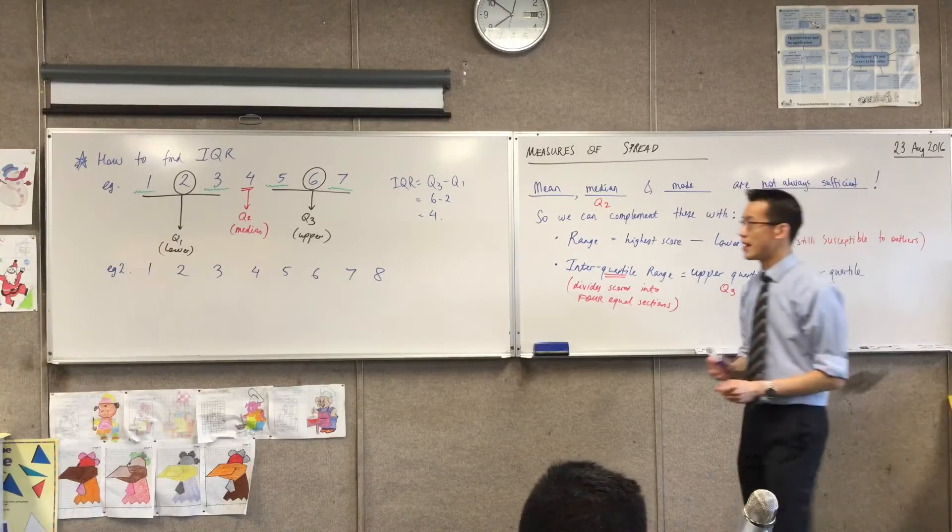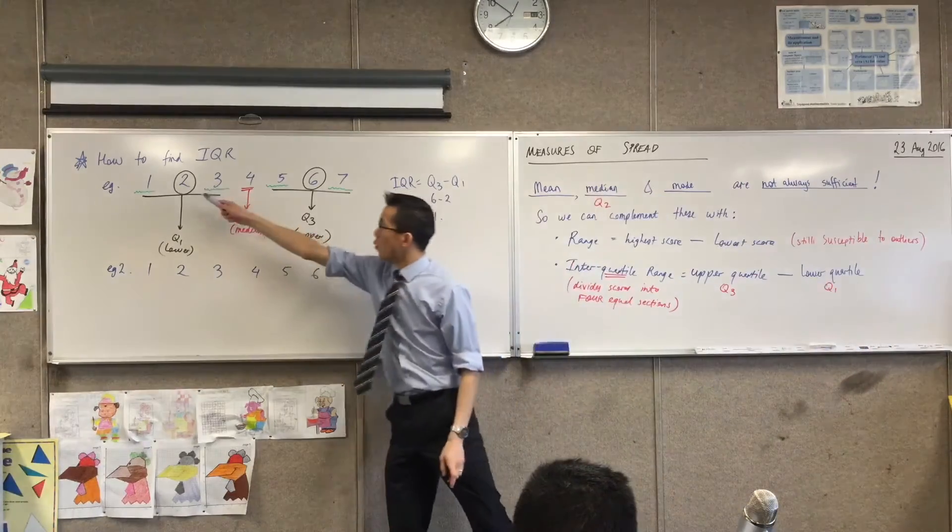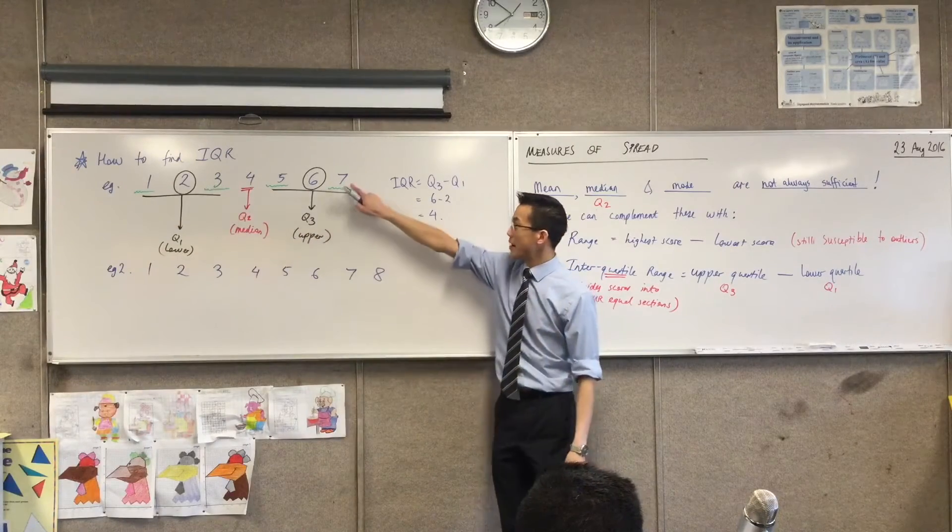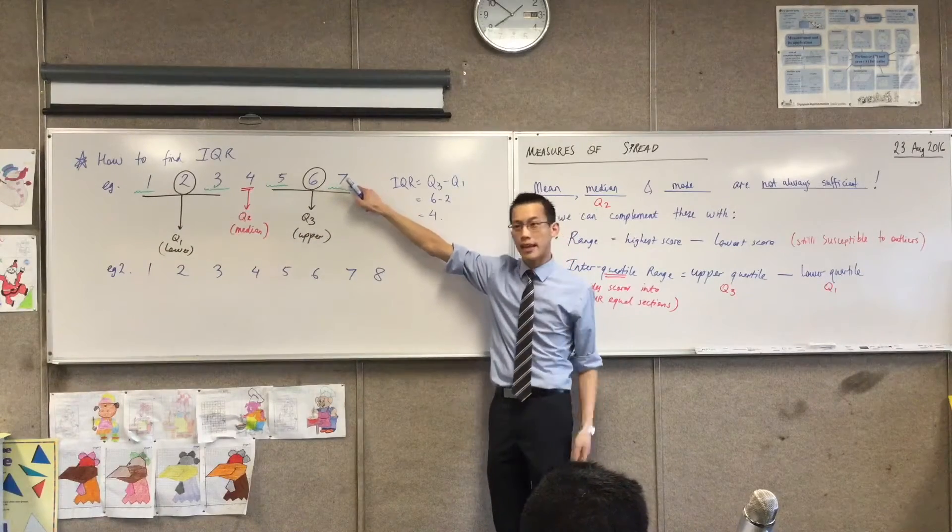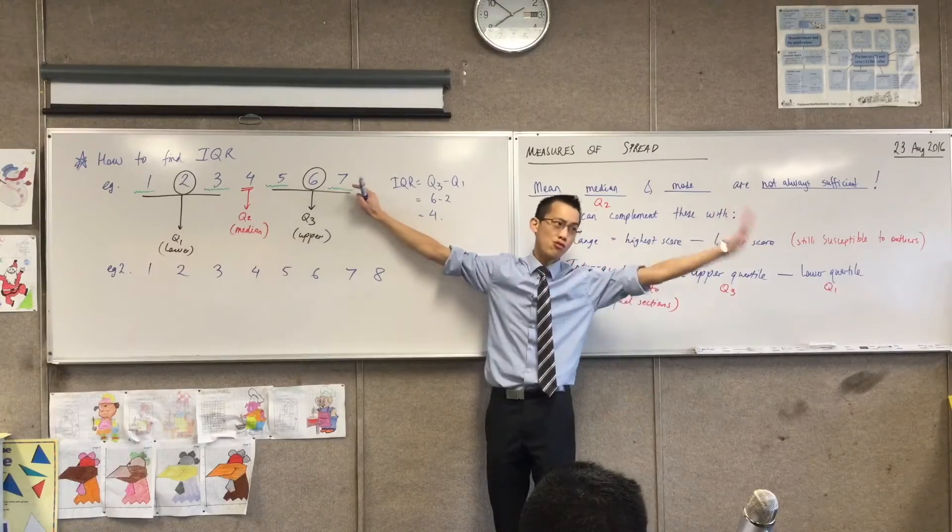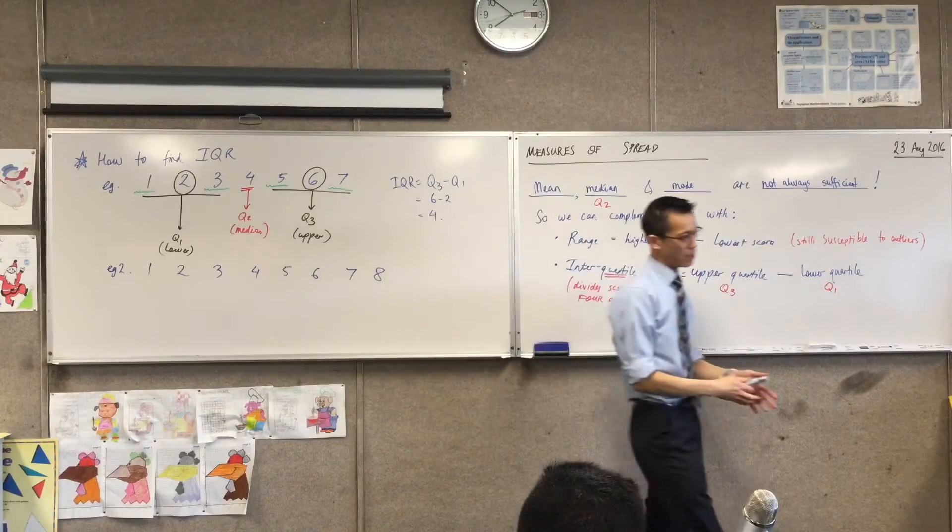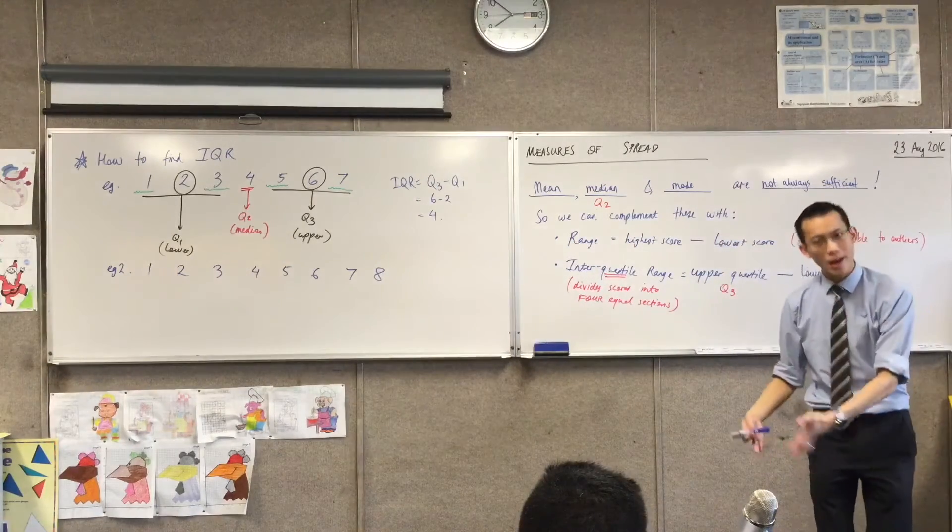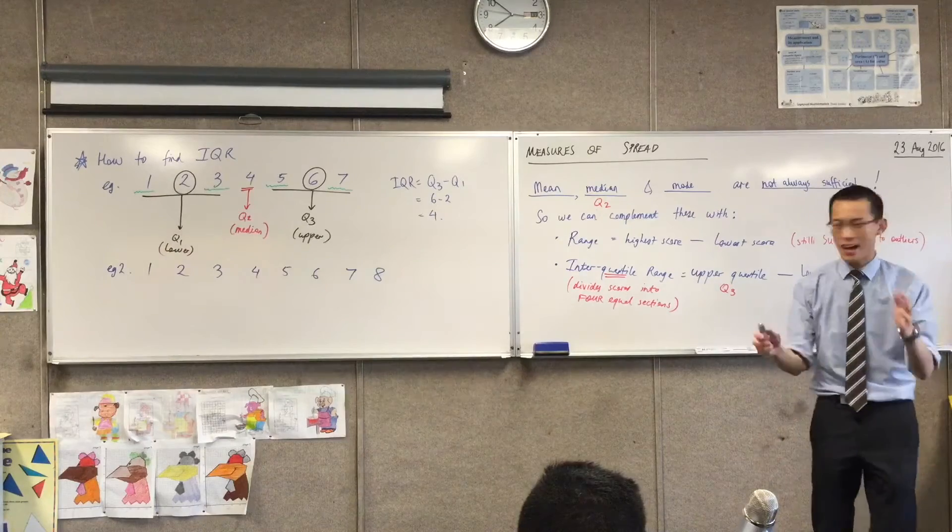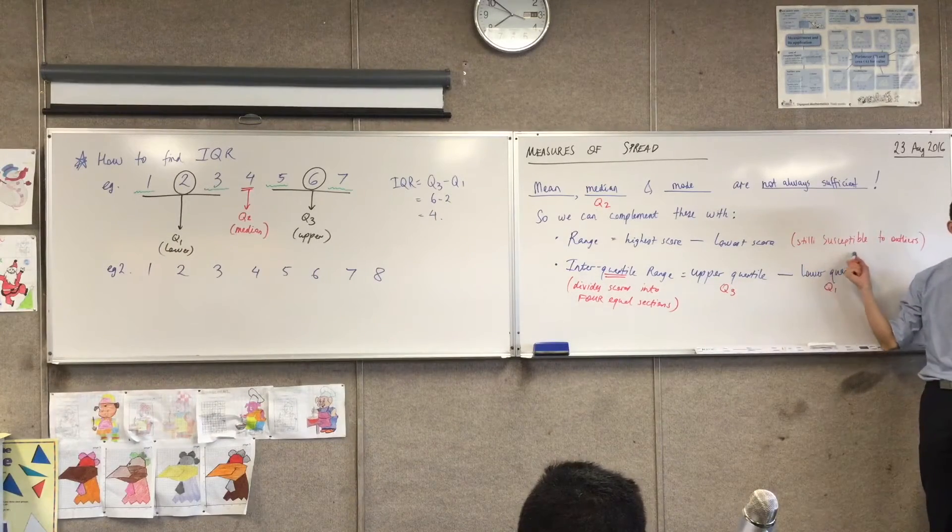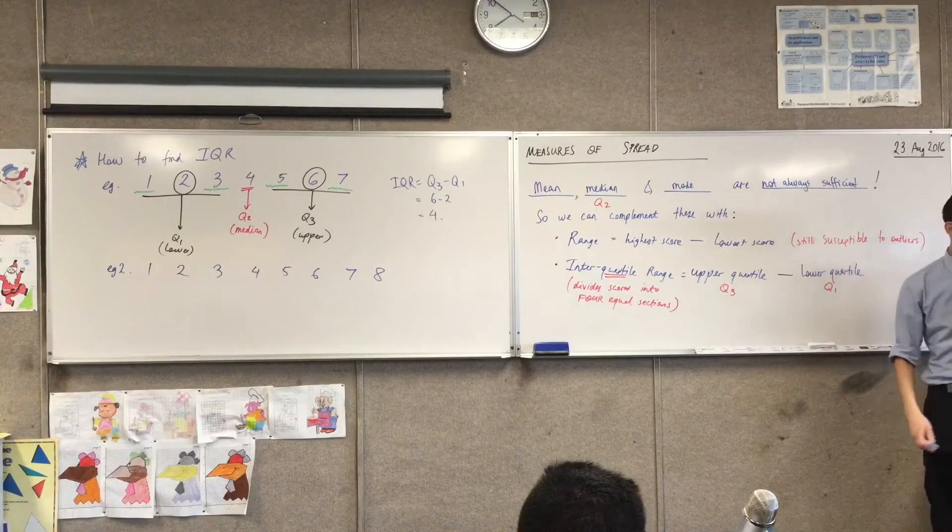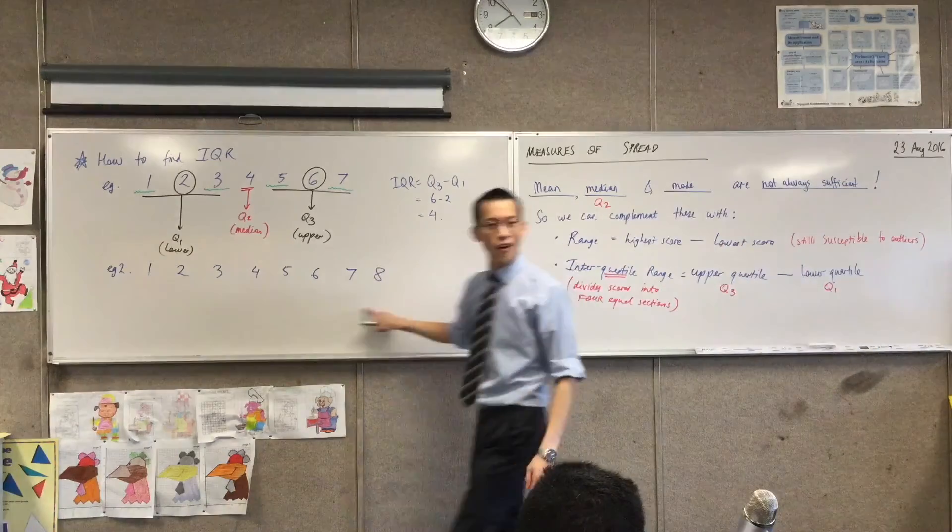Now, by the way, can you notice? See how I've got 1, 2, 3, 4, 5, 6, 7. I could have made this guy over here, this 7, I could have made it like 100, right? Make it a huge outlier. The range will change, but the interquartile range will stay the same. So it's kind of like trying to avoid this problem here. You're like, oh, you've got an outlier, no big deal. The interquartile range is cool, all right?